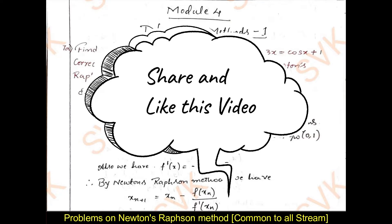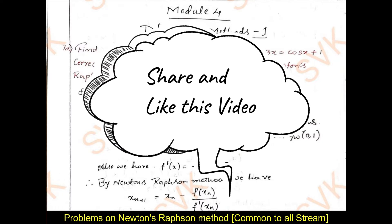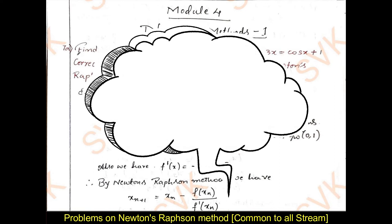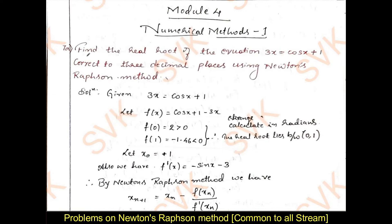I will be solving first the Newton-Raphson method. You should know how to solve the problems of Newton-Raphson method. Consider the given problem: find the real root of the equation 3x equal to cos x plus 1, correct to 3 decimal places using Newton-Raphson method.